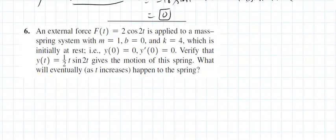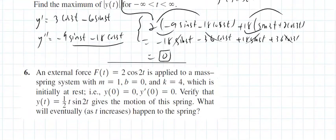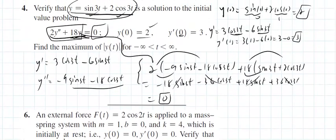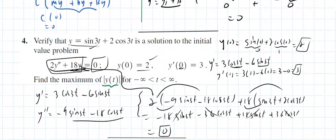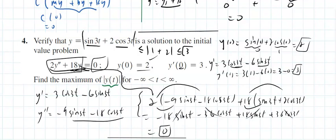It also asks to find the maximum of the absolute value of y. Looking at y equals sin(3t) plus 2·cos(3t): the biggest sine can ever be is 1, and the biggest cosine term can ever be is 2, so for sure the absolute value is less than or equal to 3. The maximum it could ever be is 3.